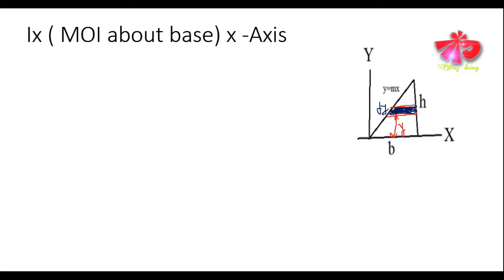Now we need to determine the moment of inertia about the base, that is the x-axis. For calculation of moment of inertia about the x-axis, we need to take a strip as shown in the figure, so that we can easily apply the formula: Ix = ∫ y² dA. Always remember that while determining the moment of inertia about the x-axis, we generally take a strip parallel to the x-axis.